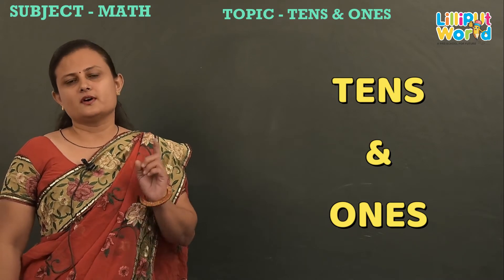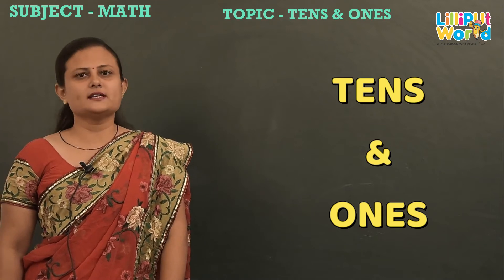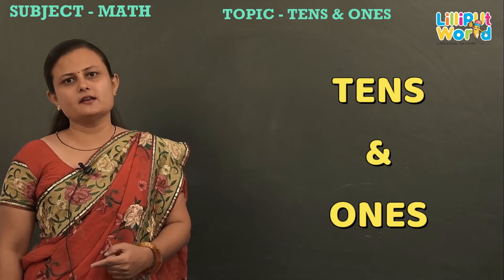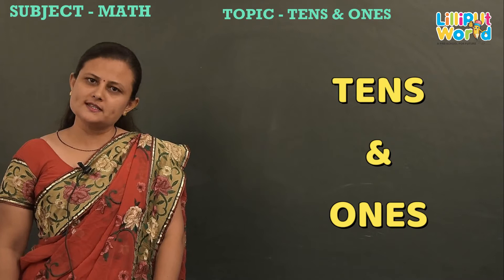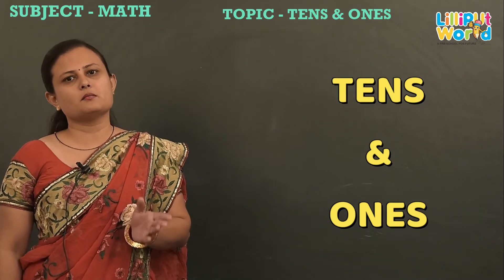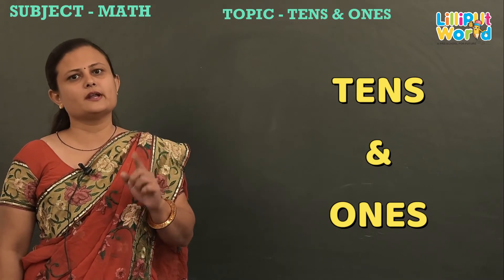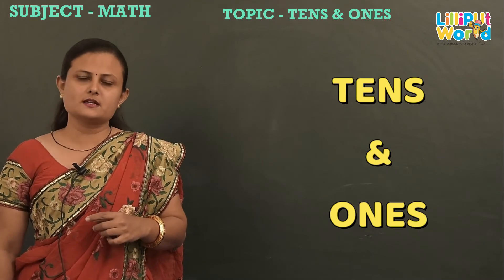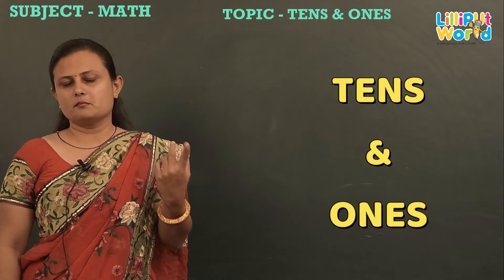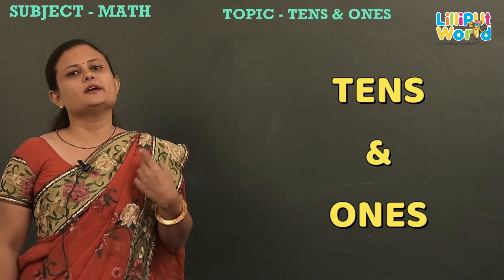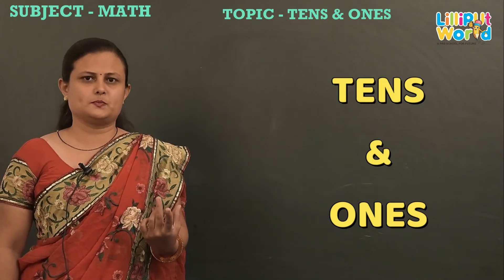So first is ones. So what is ones? One to nine numbers are ones numbers because the numbers are single. So one to nine numbers are ones numbers, and when the numbers are double, so it comes in tens place.